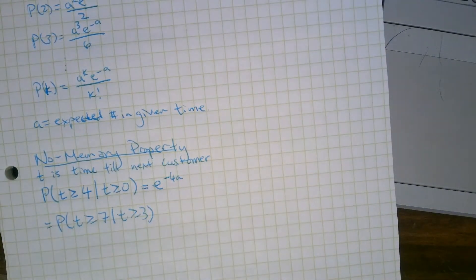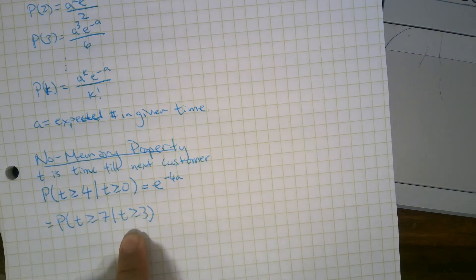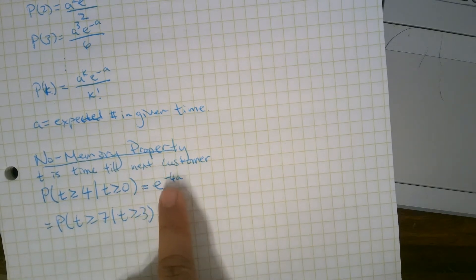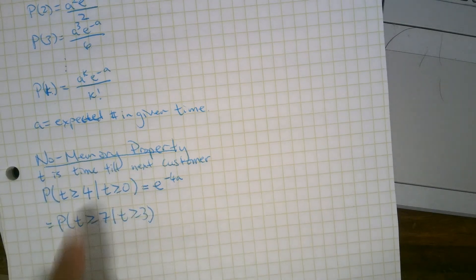Meaning, if we've waited 3, let's say these are minutes, if we've waited 3 minutes and there are no customers, then the probability that we'll wait 7 minutes is the same E to the negative 4A, which is the same as the probability that we started the day and waited 4 minutes for the next customer.